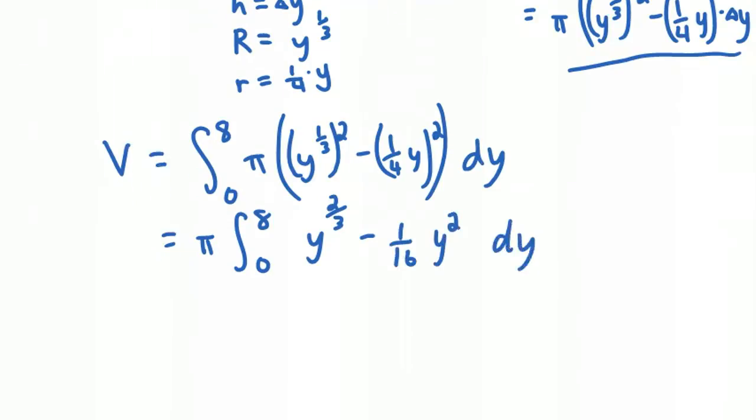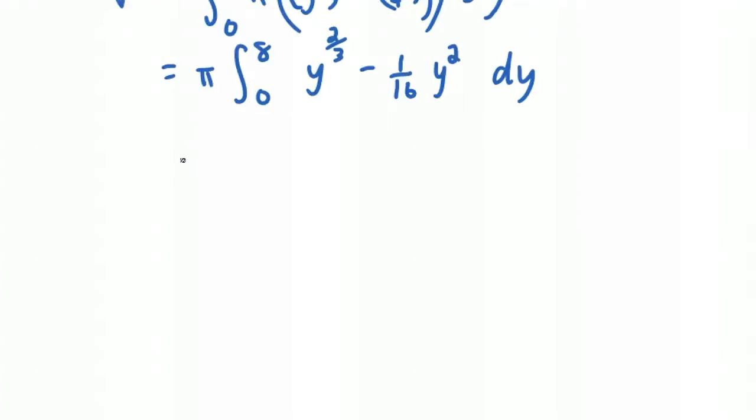What we get from here is that the integral of y to the two-thirds is y to the five-thirds, because two-thirds plus one is like two-thirds plus three-thirds, which would give you five-thirds, over five-thirds. Now, dividing by five-thirds is like multiplying by three-fifths. So, in the next step, we'll change that to instead of five-thirds down here, we'll put three-fifths out front. And then over here, we still have one-sixteenth y cubed over three.